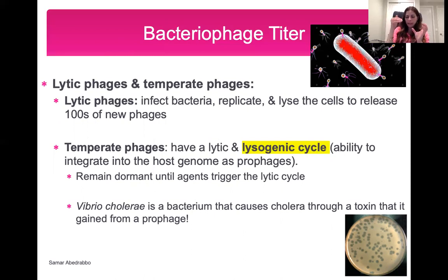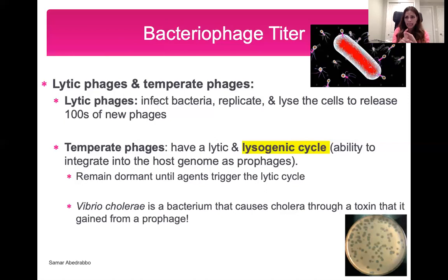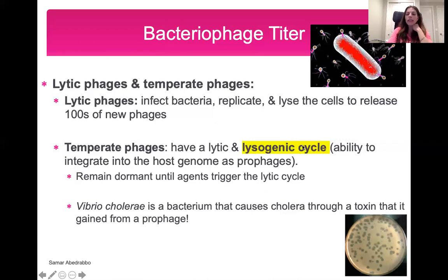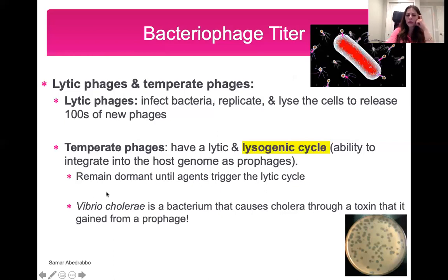Temperate phages have both a lytic and a lysogenic cycle. In the lysogenic cycle, a virus injects its genetic material into a bacteria, but that genetic material gets incorporated into the bacteria's own DNA. When integrated into the host genome, we call it a prophage. The phage keeps making copies of its genetic material, and something during the bacteria's lifetime — such as different chemicals or radiation — may trigger a switch from the lysogenic cycle back to the lytic cycle, causing the bacterial cell to lyse and release many more phages.